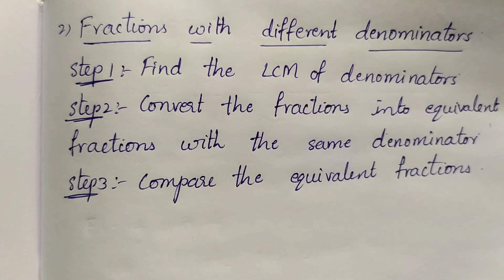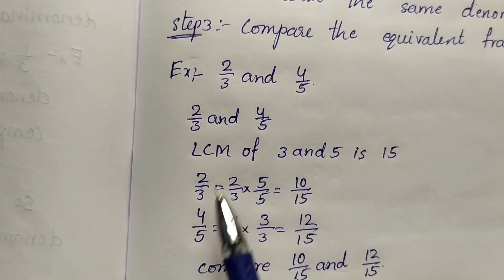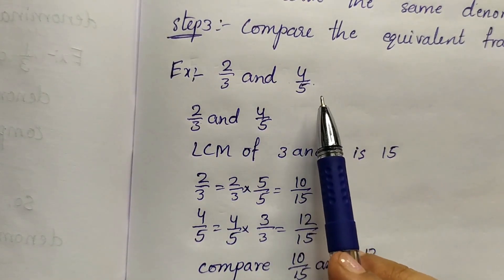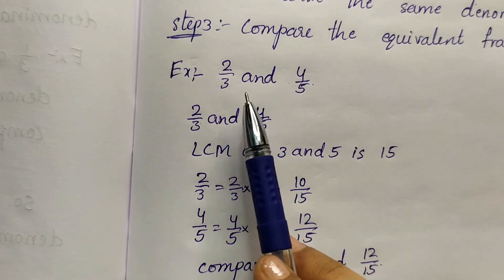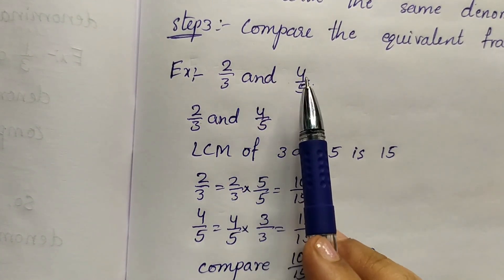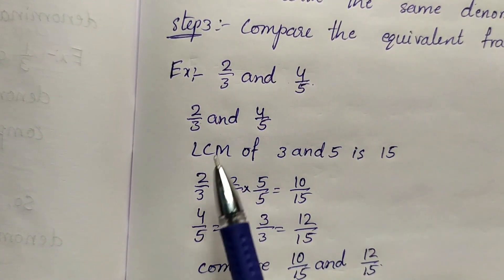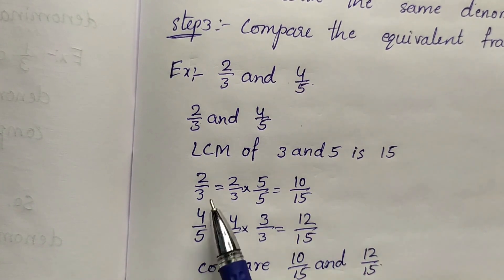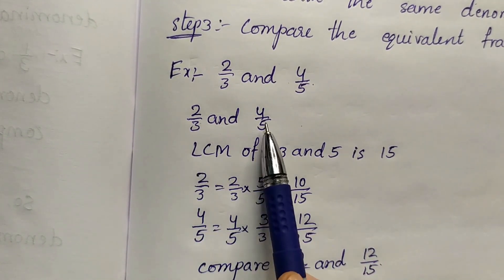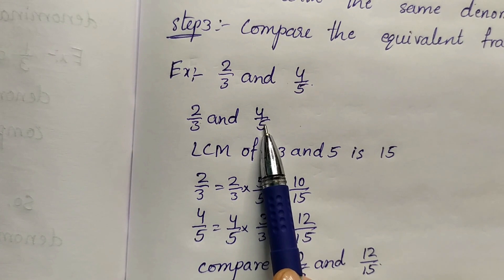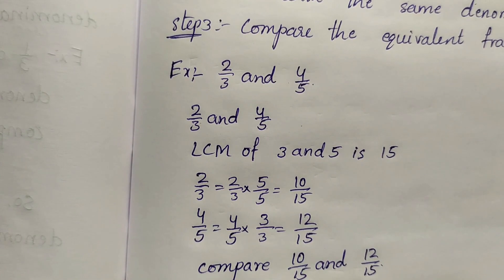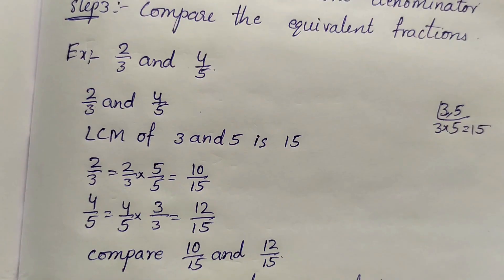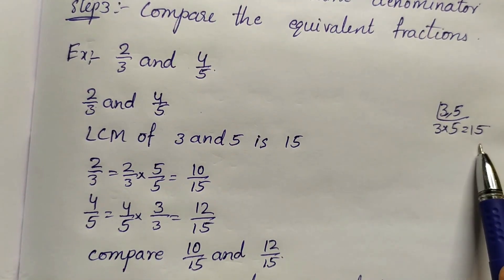For example, we have 2 by 3 and 4 by 5. We have different denominators and different numerators. We have to compare 2 by 3 and 4 by 5. In such cases we have to find the LCM of the denominators. Here we have the denominators 3 and 5. Find the LCM of 3 and 5 — the LCM of 3 and 5 is 15.